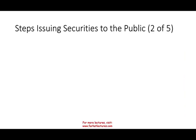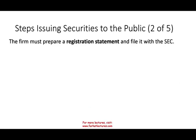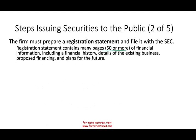Step two is to prepare and file what's called the registration statement with the SEC. It contains, in some cases, 50 pages or more of financial information, including financial history, details of existing business, proposed financing, and plans for the future. If you are selling part of your company to the public, they want to know everything about your business — financial information, how you're planning to finance yourself, what your plans are for the future. The financial statements will need to be audited.